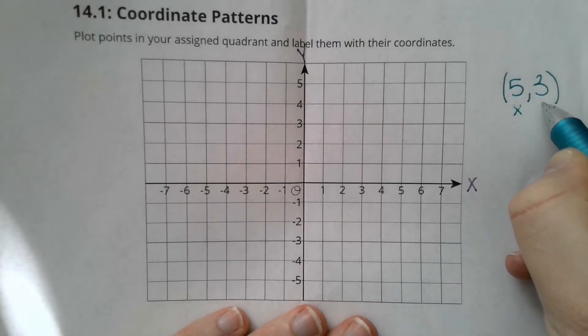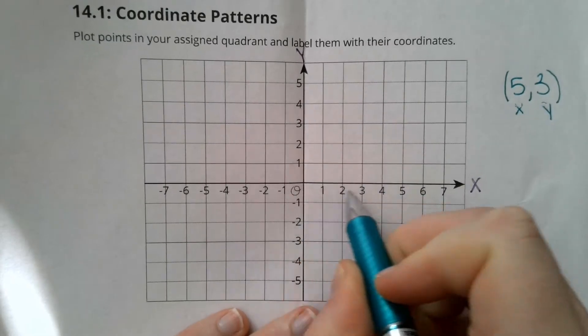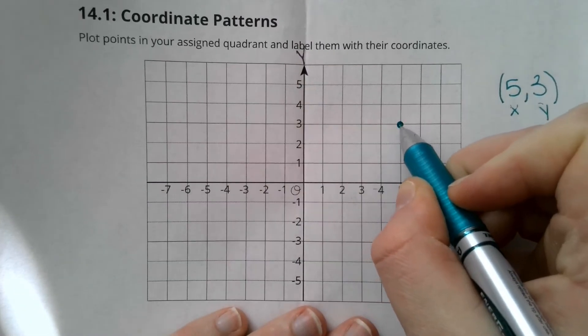Remember 5 is that x-coordinate, 3 is that y. So I'll find 5 and then 3 and I'll plot.